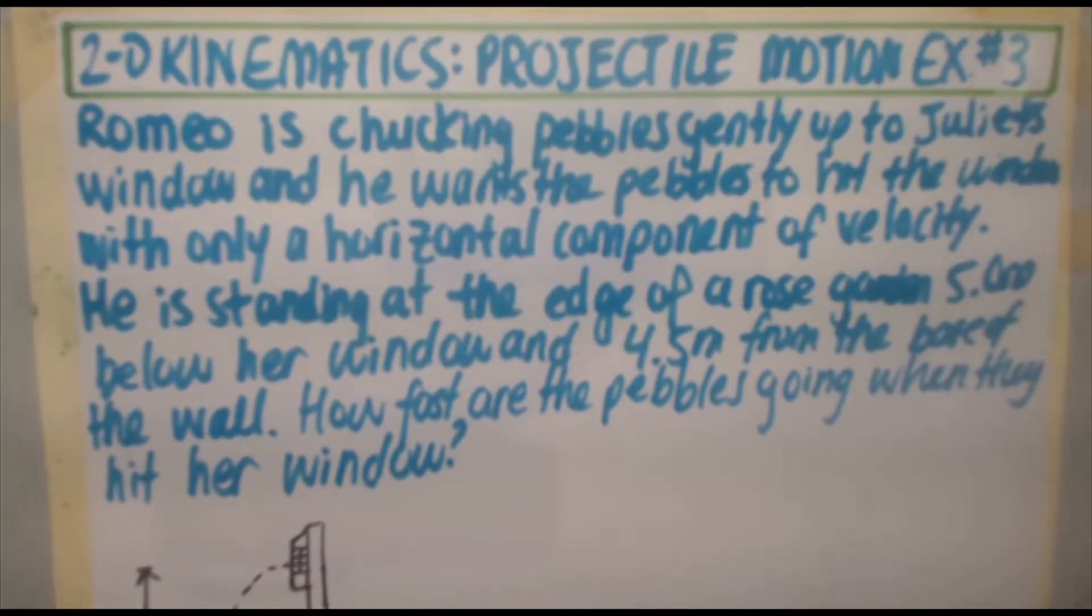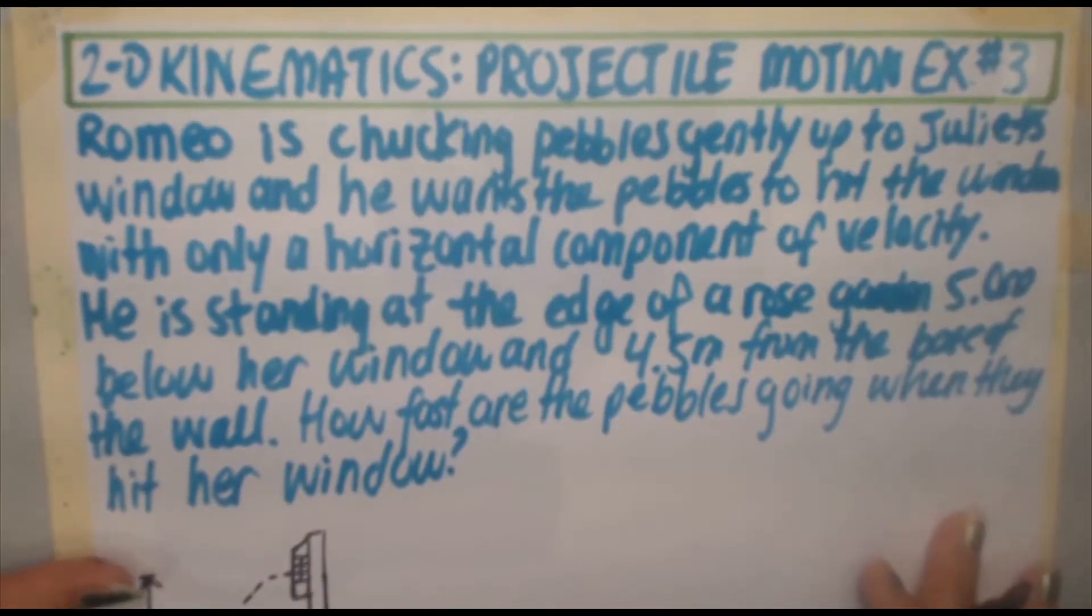In this situation, Romeo is chucking pebbles gently up to Juliet's window and he wants the pebbles to hit the window with only a horizontal component of velocity. He is standing at the edge of a rose garden 5.0 meters below her window and 4.5 meters from the base of the wall. How fast are the pebbles going when they hit her window?